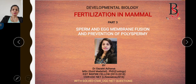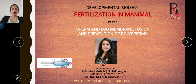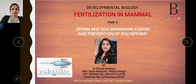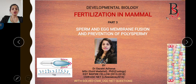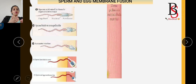Welcome back to Bio School. Today's topic is fusion of sperm and egg plasma membrane and the prevention of polyspermy in mammals. We will discuss how the sperm and egg plasma membrane get fused, what proteins are involved, and how polyspermy is prevented in mammals. At the end we'll solve some previous year questions. But first, let's look at the steps of fertilization.